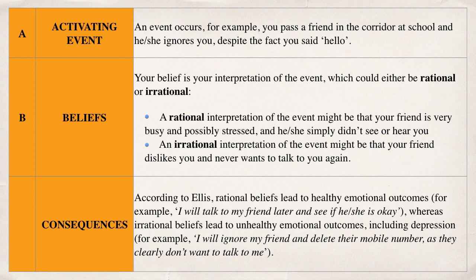According to Ellis, rational beliefs lead to healthy emotional outcomes — for example, 'I'll talk to my friend later and just make sure they're okay, because it's not like them to ignore me.' Whereas an irrational belief may lead to unhealthy emotional outcomes such as depression — for example, deciding to ignore them back, delete their number, unfriend them on Facebook, and unfollow them on Twitter, because they clearly don't want to talk to you. By comparison, that is a very unhealthy and irrational way of dealing with it.